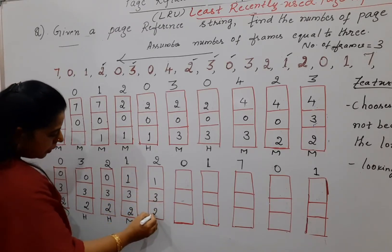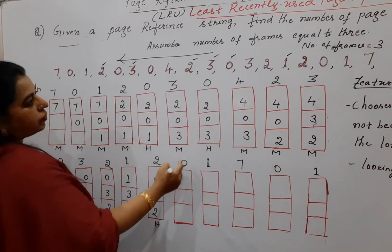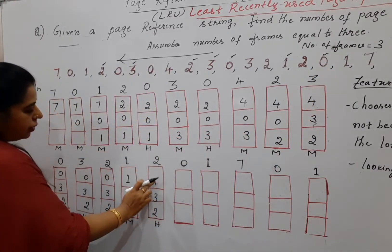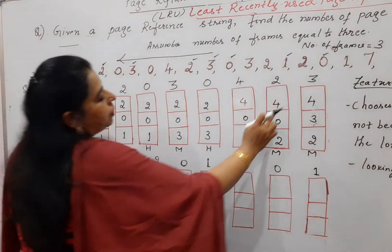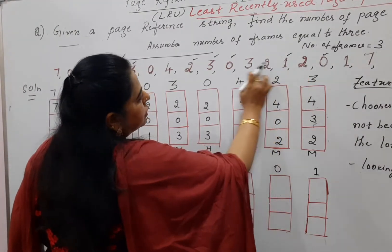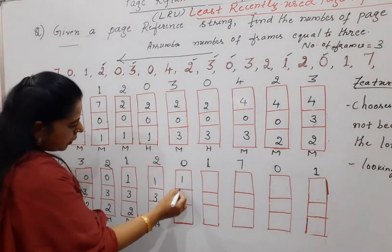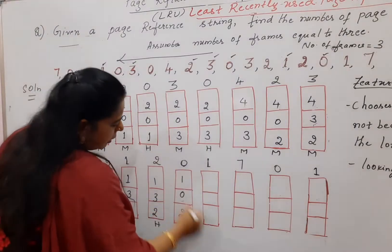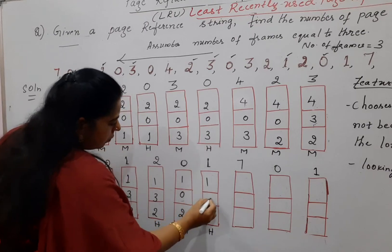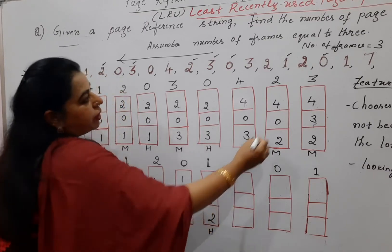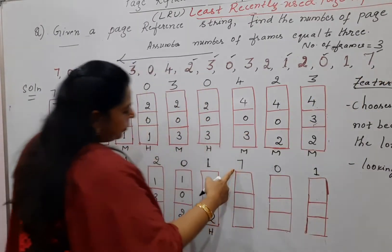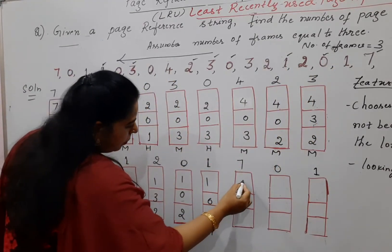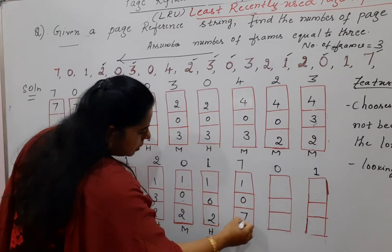Two is already there — it is a hit. Next is zero: looking backward in the reference string, the previous three pages are one, three, and two. Three was used long ago, so replace three with zero. This was a miss. Next is one, which is already there — it is a hit. Frames are now one, zero, and two. Next is seven: looking backward, two was used long ago, so replace two. Frames become one, zero, and seven. This was a miss.